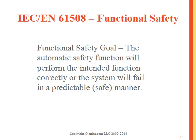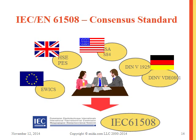IEC 61508 defines functional safety as: the automatic safety function will perform the intended function correctly, or the system will fail in a safe or predictable manner. Working groups and national standards bodies from around the globe have been involved in bringing together the IEC 61508 standard.